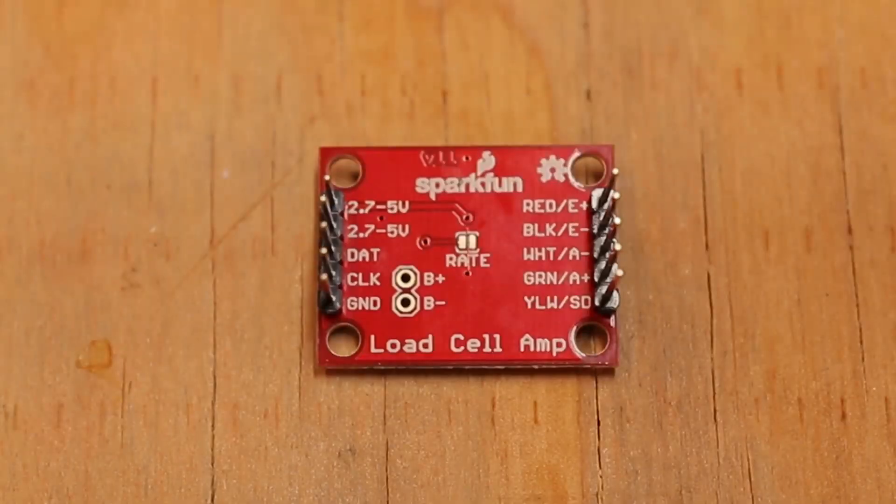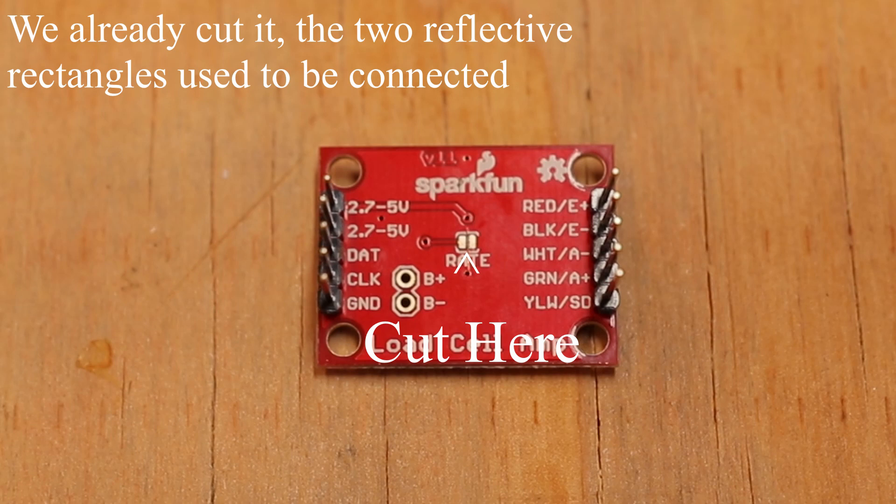As you can see here on the back of the load cell amp, there is a jumper with the word rate underneath it. Using an exacto knife, carefully just cut the wire.